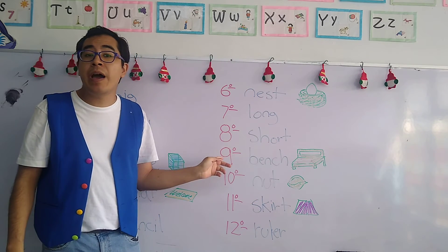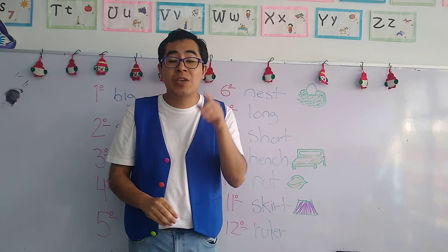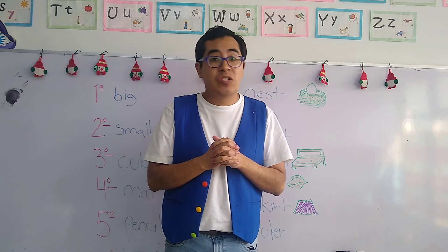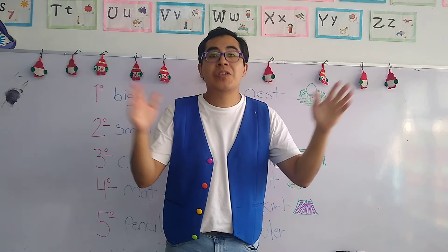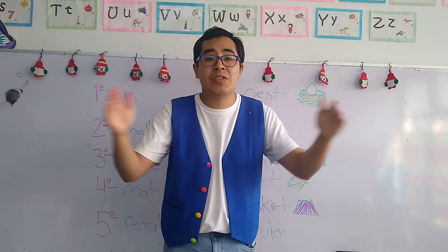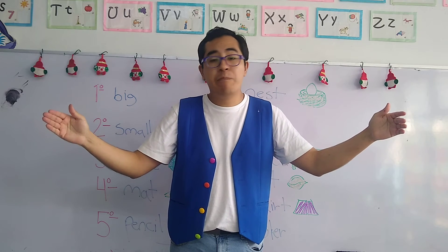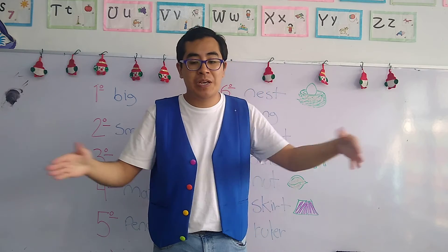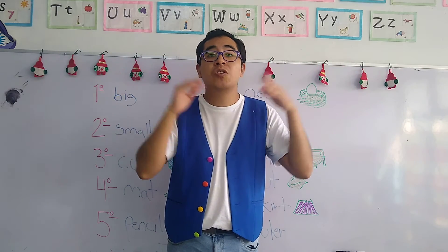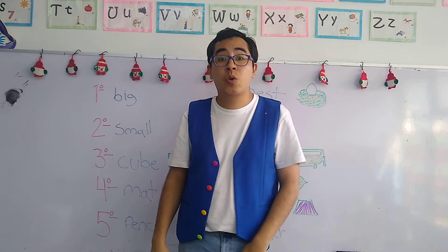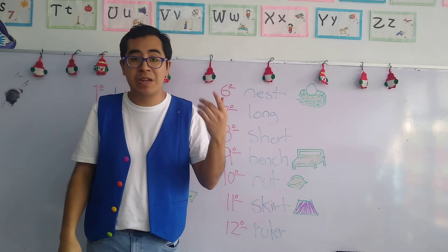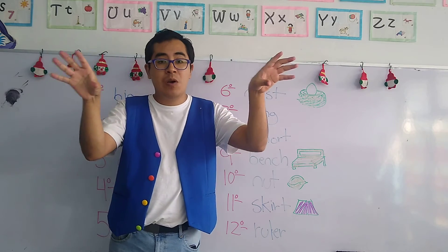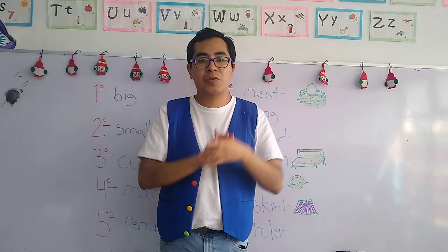Let's continue with number nine: "bench." The bench is an object that we use to sit down, but don't get confused — it's not a chair. Remember, the chair is shorter. The bench is larger, so you can put two or three people on a bench. In Spanish, it's called "banca" and it's color brown. Most of them — la mayoría — are color brown and they are located in parks — están localizadas comúnmente en parques.